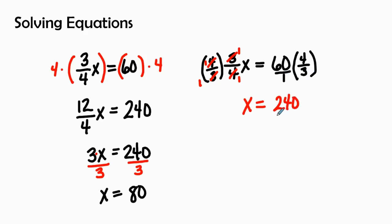One times three is three. Therefore x equals the simplified version of 240 over three which is 80.